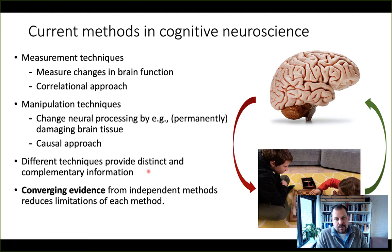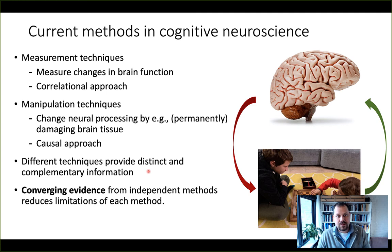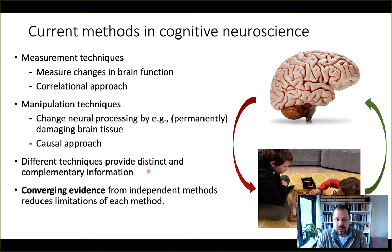These different techniques provide distinct and complementary information. While each method has clear shortcomings, when we replicate our findings using different methods, we get quite complementary information. This is called converging evidence — using independent methods can somewhat reduce the limitations of each, as long as they support each other, or we may have open questions that need to be answered by future research.